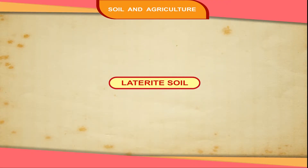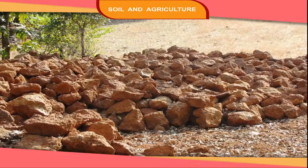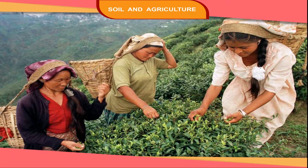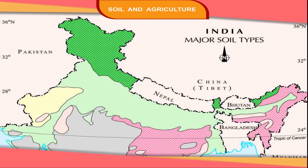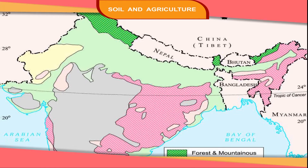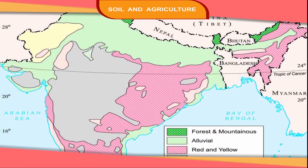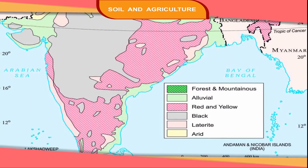Laterite soil is formed from a variety of rocks that are leached in hot, wet climate. It is good for growing tea and coffee. It is found in Andhra Pradesh, Karnataka and the north-eastern states.